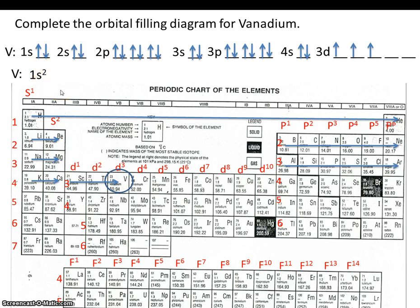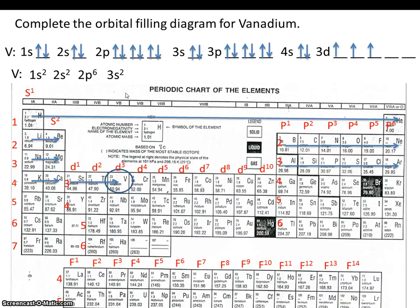So 1s2, 2s2, and 2p — let's count them: 1, 2, 3, 4, 5, 6 — six electrons, so 2p6, 3s2, 3p6, 4s2, and 3d3. So this is the electron configuration for vanadium.